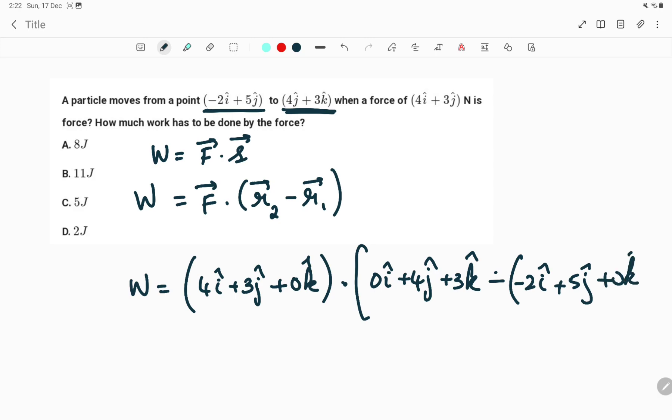If you simplify, you will get: work done equals (4i + 3j + 0k) dot (0i - minus of -2). Minus of -2 is +2, so that will be +2i.